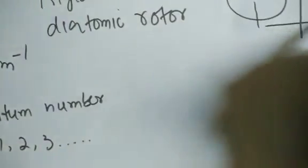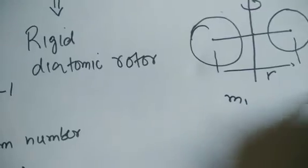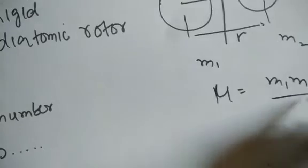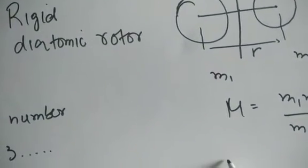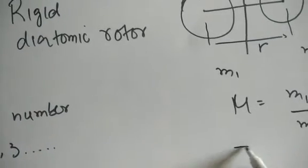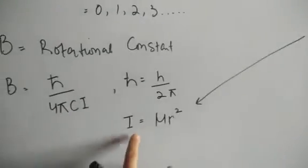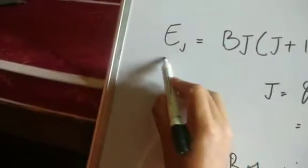The moment of inertia - if this distance is r and the masses are m₁ and m₂, the reduced mass is μ = m₁m₂/(m₁+m₂). So the moment of inertia I equals μr², where r is the distance. So this is the energy of a rigid rotor.